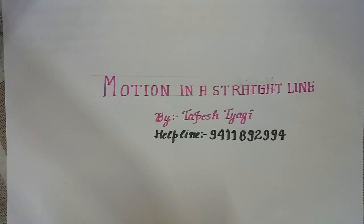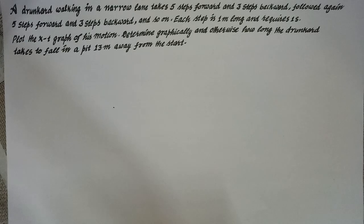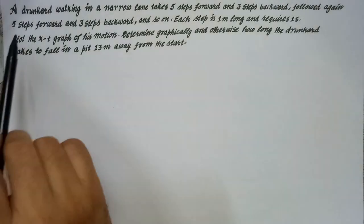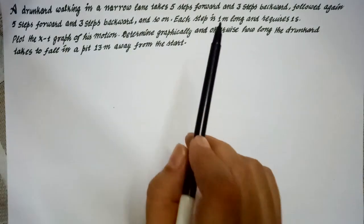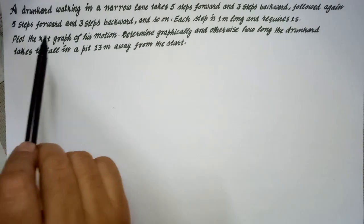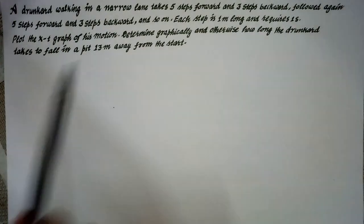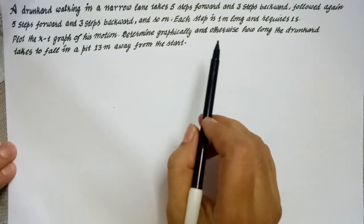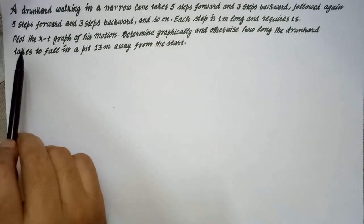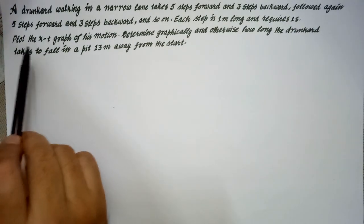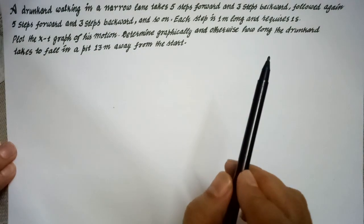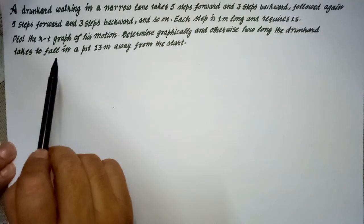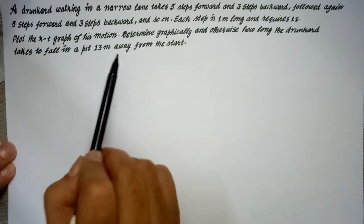My dear students, now we are learning motion in a straight line. We are going to solve a numerical question. According to this question, a drinker walking in a narrow line takes 5 steps forward and 3 steps backward, followed again by 5 steps forward and 3 steps backward, and so on. Each step is 1 meter long and requires 1 second. Plot the displacement-time graph for his motion.